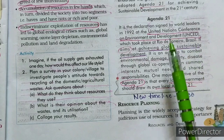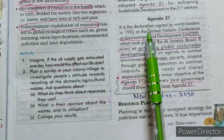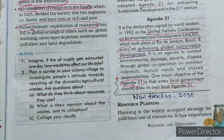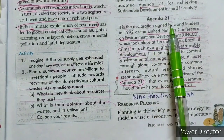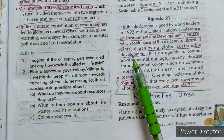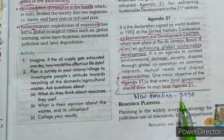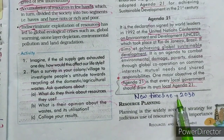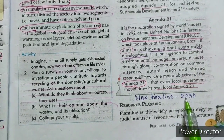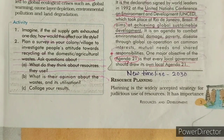Agenda 21 was signed by 100 countries to achieve global sustainable development. However, it has been observed that by 2021 this aim was not possible to achieve, so the timeline has been changed. The new target given by the United Nations is to achieve global sustainable development by 2030.